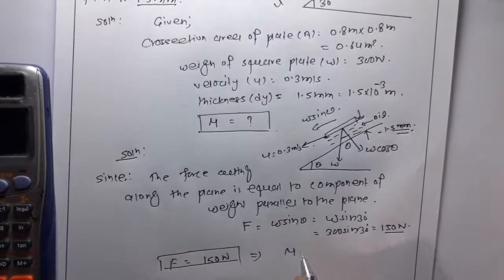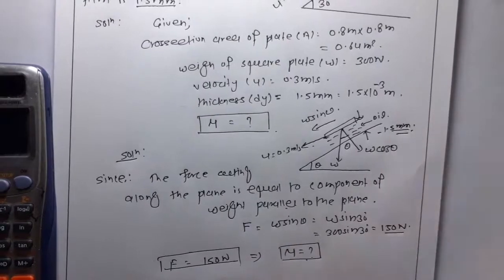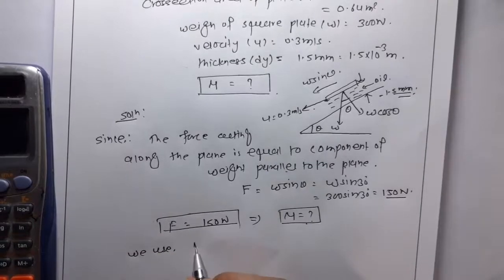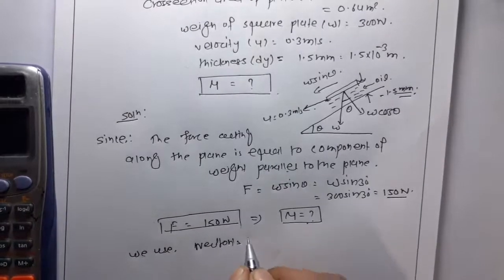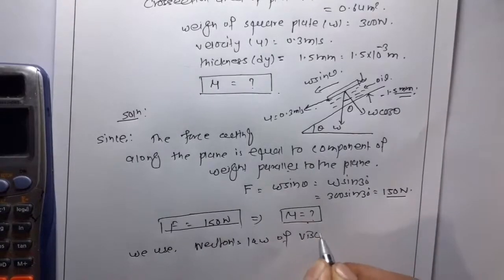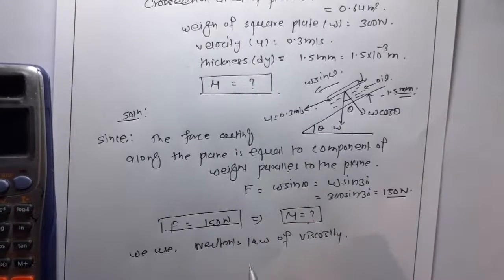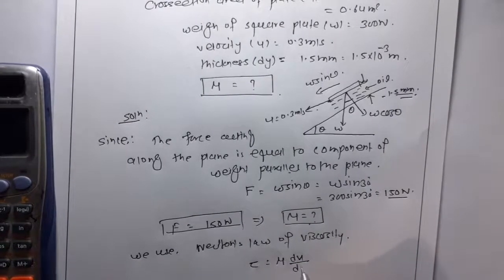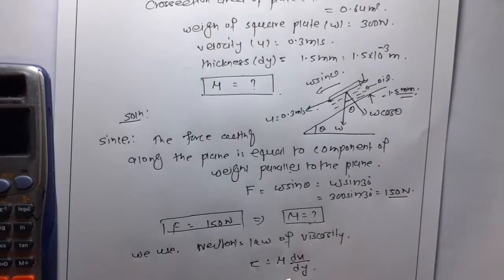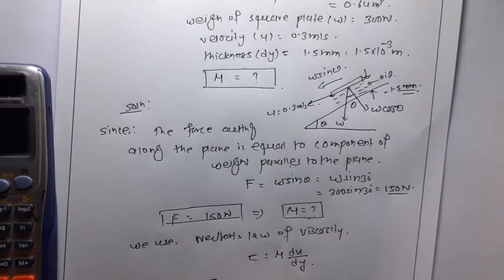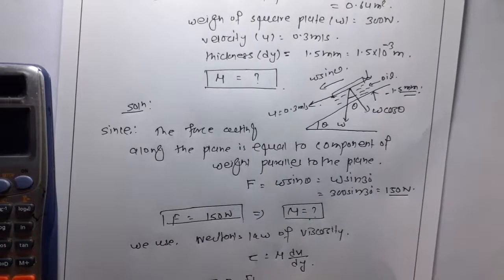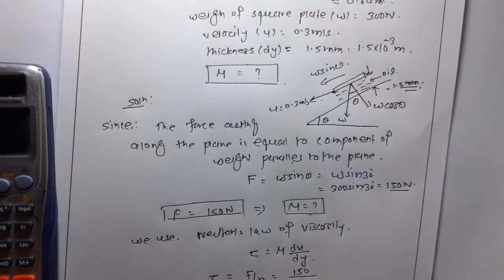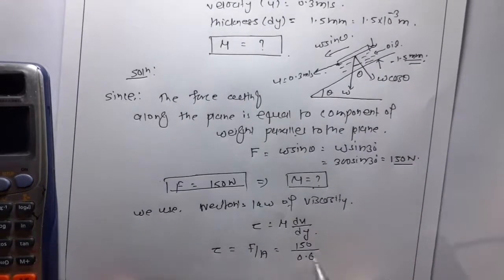Now we have to calculate the coefficient of viscosity and for that we use Newton's law of viscosity which states that tau is equal to mu du by dy. We know shear stress tau is given by F by A, so F is 150 and area is 0.64.